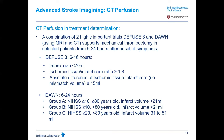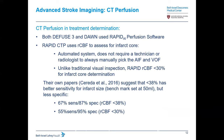DIFFUSE 3 had a range of 6 to 16 hours with infarct size less than 70 mL, ischemic tissue-to-infarct core ratio greater than 1.8, and absolute mismatch greater than 15 mL. DAWN extended up to 24 hours using varying infarct volumes stratified by age and NIH stroke scale. Both DIFFUSE 3 and DAWN used the RAPID AI perfusion software, which is now standard at many major institutions.